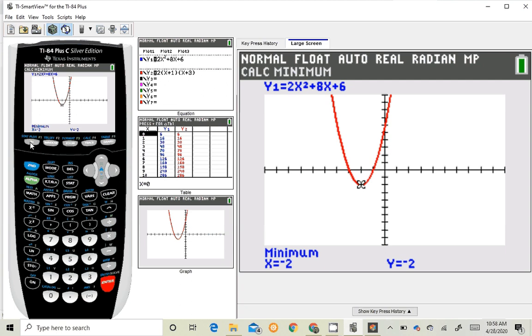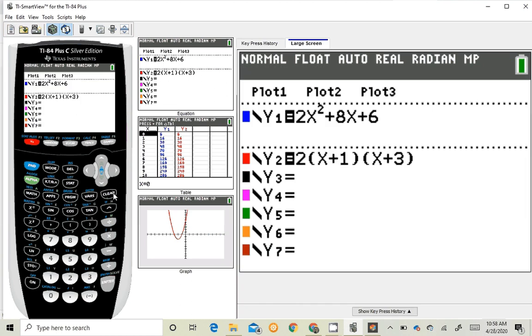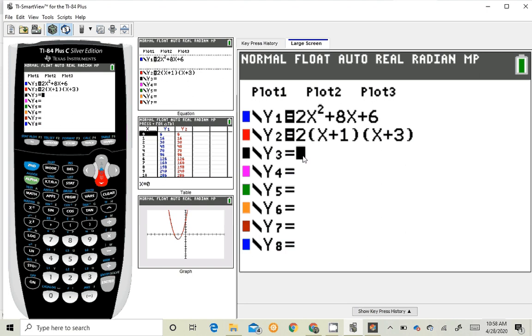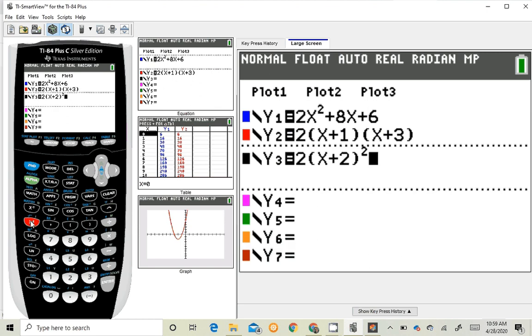So hit y equal. And I'm going to scroll down. And the leading coefficient will be the same, 2. And then I'm going to do my parentheses, x minus h, quantity square. Well, h, the actual h that we found, the actual x value of our vertex was negative 2. So x minus that would be x plus 2. Then I'll close my parentheses, and then I'm going to square that. And then the k is negative 2, and that stays the same. So minus 2.